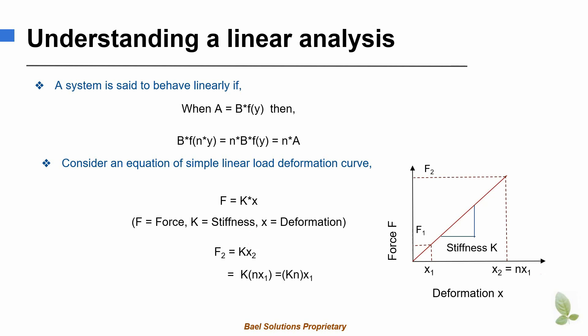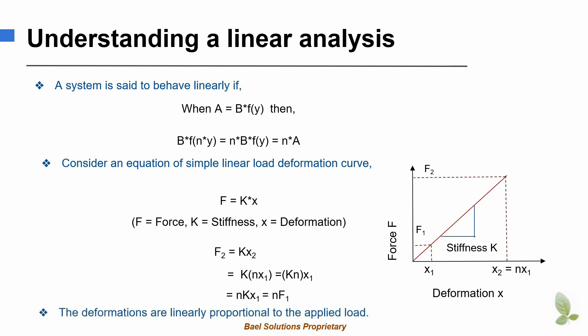Now I simply rewrite the equation by writing n on the left side of k. This tells me that f2 is equal to n times k times x1. But recall that k times x1 is f1. Therefore, f2 is n times f1. Thus, if we multiply the deformation x by n, the force f gets scaled by the factor n. Therefore, we call this system a linear system.